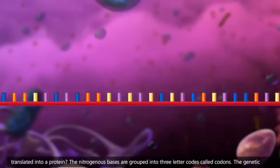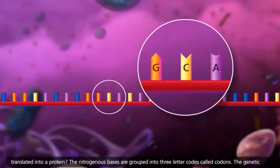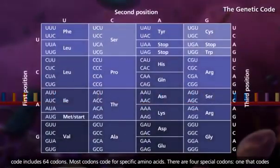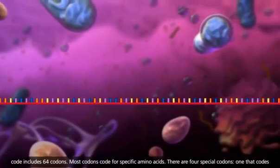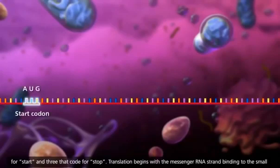The nitrogenous bases are grouped into three-letter codes called codons. The genetic code includes 64 codons. Most codons code for specific amino acids. There are four special codons, one that codes for start and three that code for stop.